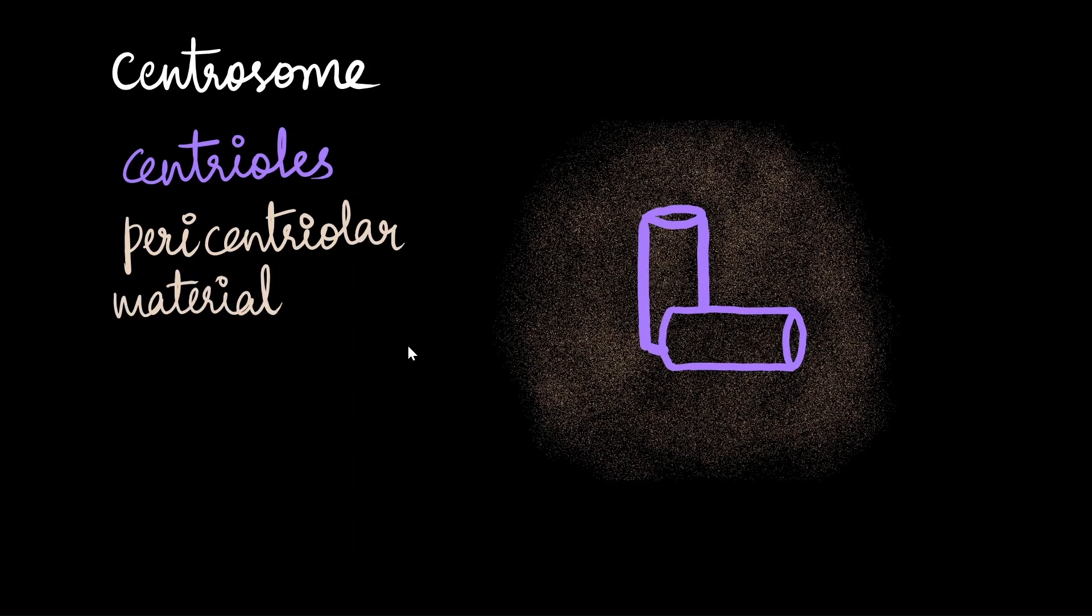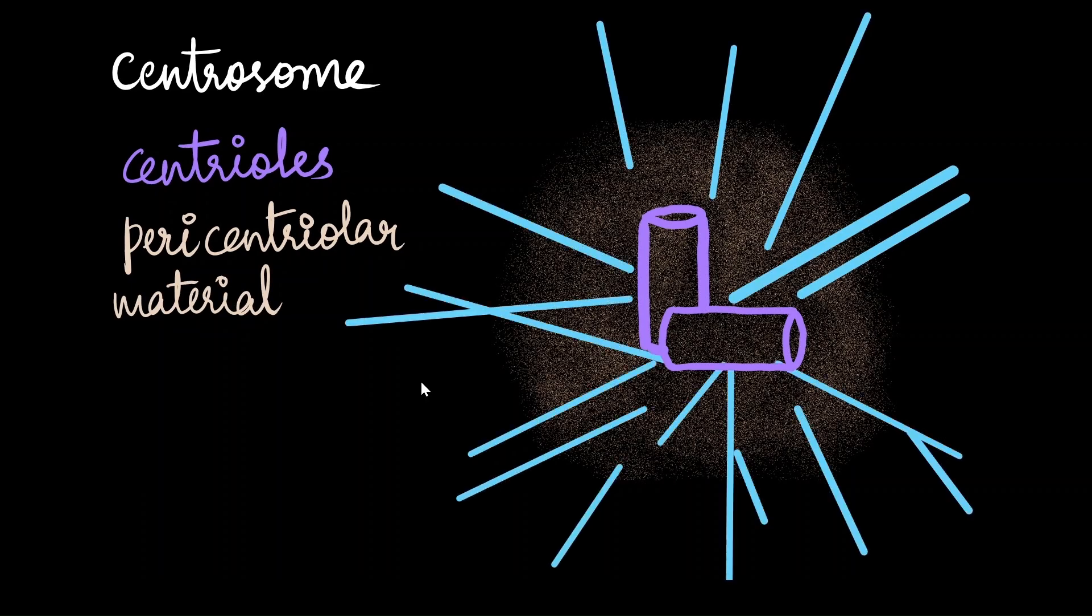Centrosomes contain two cylindrical structures called centrioles. Both centrioles in a centrosome lie perpendicular to each other. They are surrounded by pericentriolar material and have microtubules projecting from this structure.